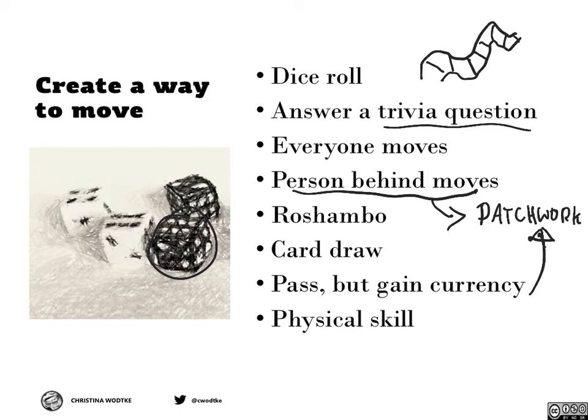You could also use Rochambeau — also known as Rock, Paper, Scissors — to decide who moves forward. You could do a card draw, same thing. Rochambeau, card draw, and dice roll are theoretically all simply chance-based approaches.